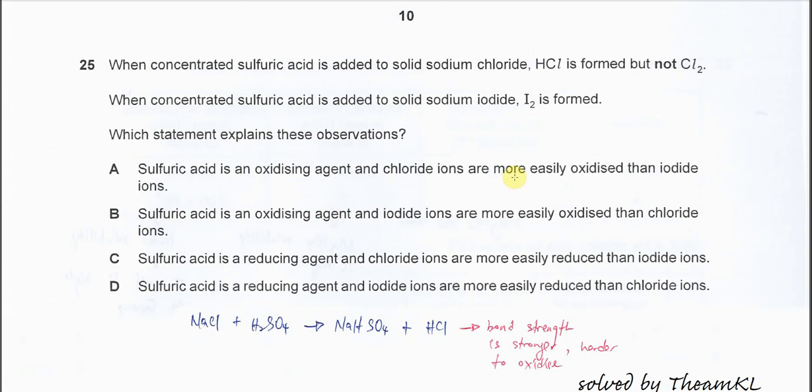Question 25. When concentrated sulfuric acid is added to sodium chloride, HCl is formed but chlorine gas will not form.